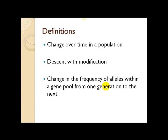Descent with modification is probably my favorite definition. It comes from Charles Darwin. Charles Darwin is often credited with discovering evolution. In actuality, he discovered mechanisms — natural selection and sexual selection — but he did not come up with the idea of evolution. That's something that predates his existence.